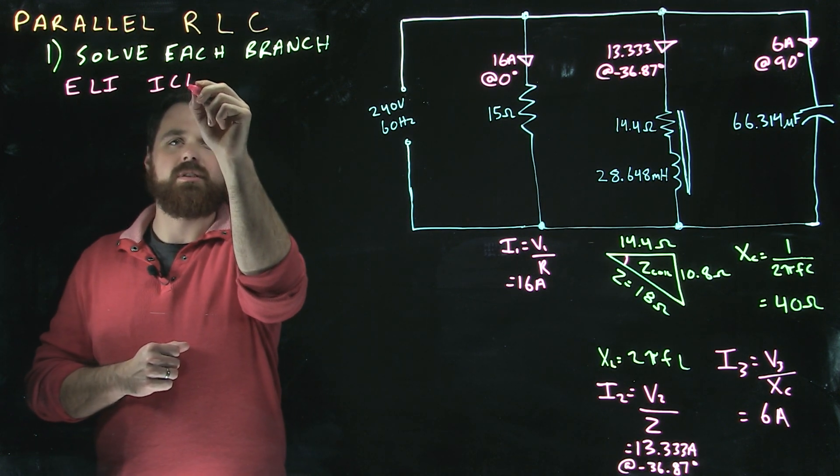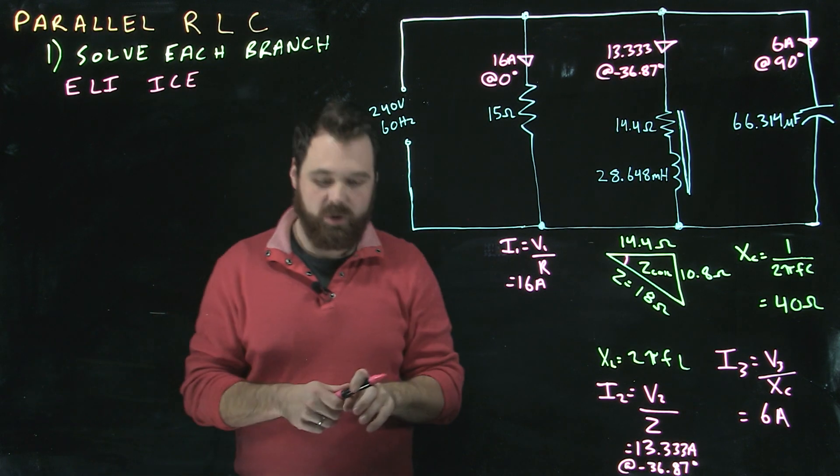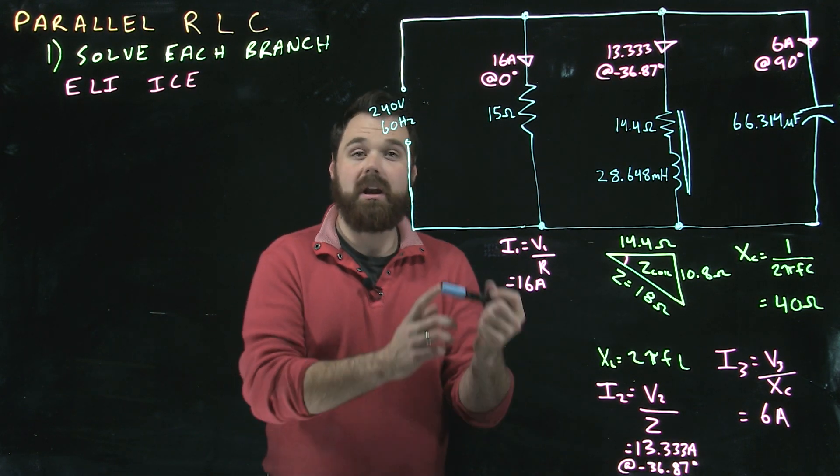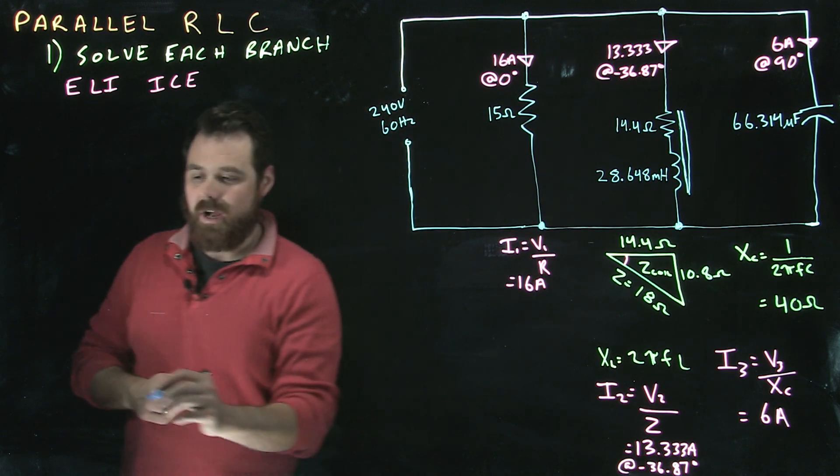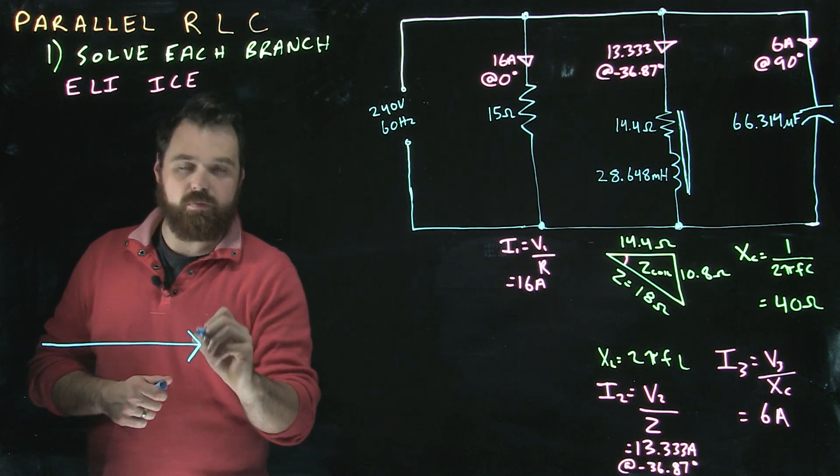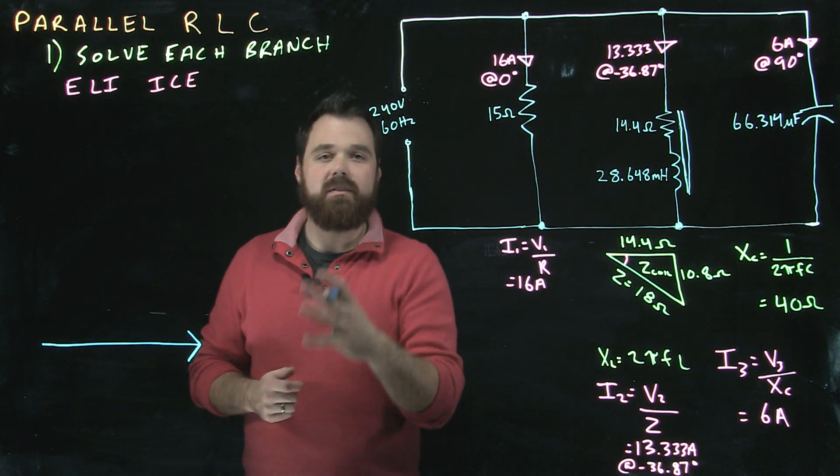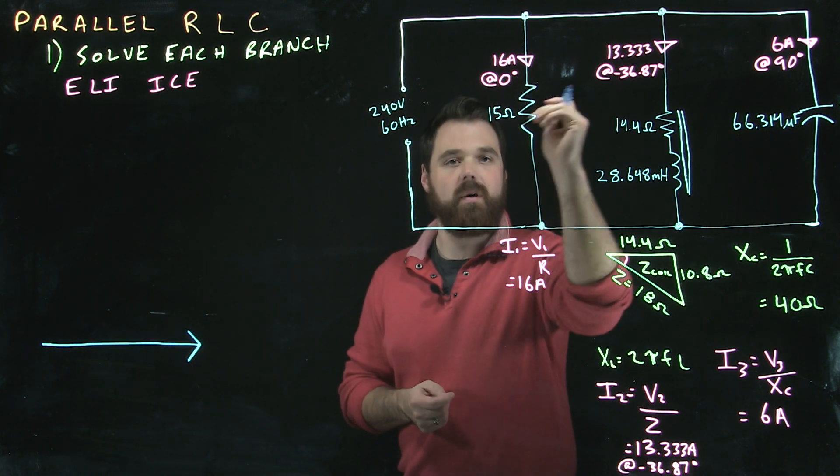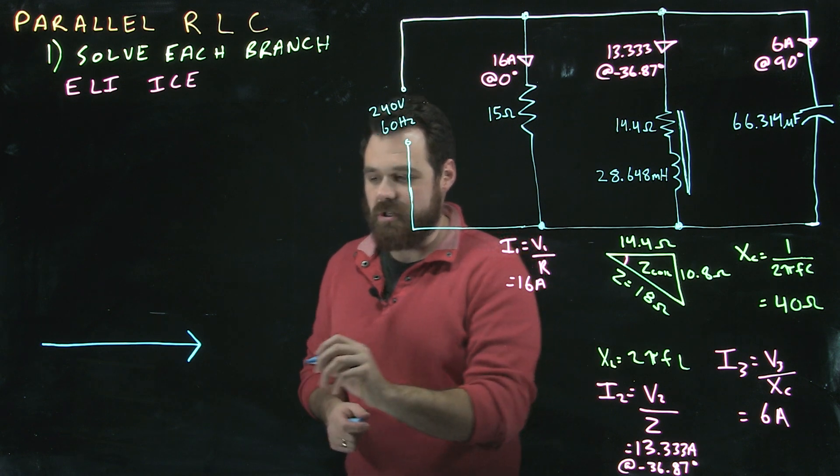And in a capacitive circuit, our current is leading our voltage. In this case, on a phasor diagram, our voltage, we're going to call our reference, because our voltage is the same throughout: 240, 240, 240. Voltage is our reference.